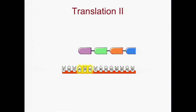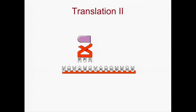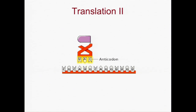The linear sequence of bases in mRNA is then translated into the linear sequence of amino acids in a protein. Each amino acid is specified by a group of three bases on the mRNA — this group of three bases is called a codon. Transfer RNA, or tRNA, matches amino acids to their corresponding bases on the mRNA. The three bases on the tRNA, called the anticodon, hydrogen bond to their complementary codon on the mRNA.